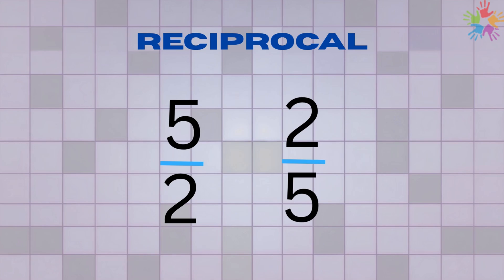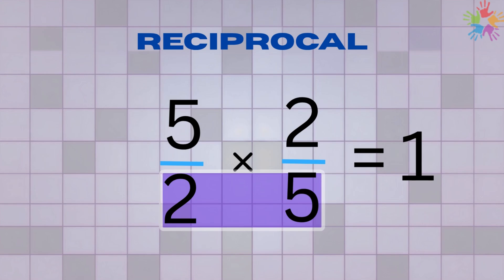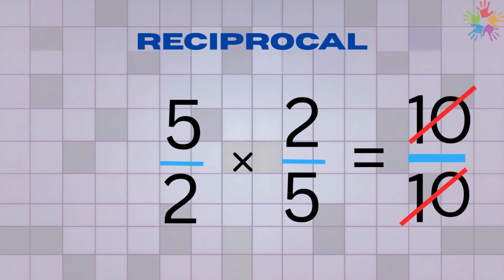One interesting thing about reciprocals is that when you multiply a fraction by its own reciprocal, you always get 1. This happens because you have the same numbers being multiplied on the top and the bottom, so they cancel each other out, leaving you with a whole, which is always equal to 1.